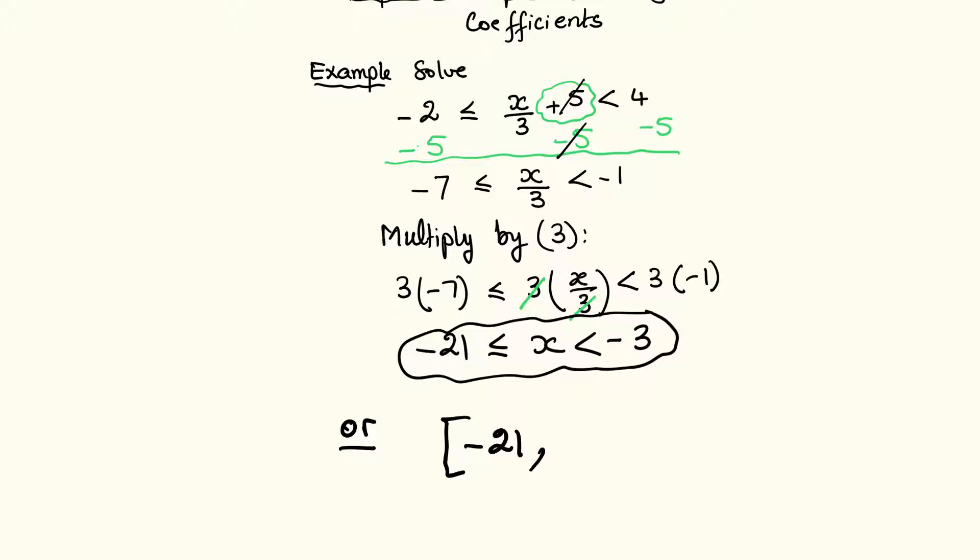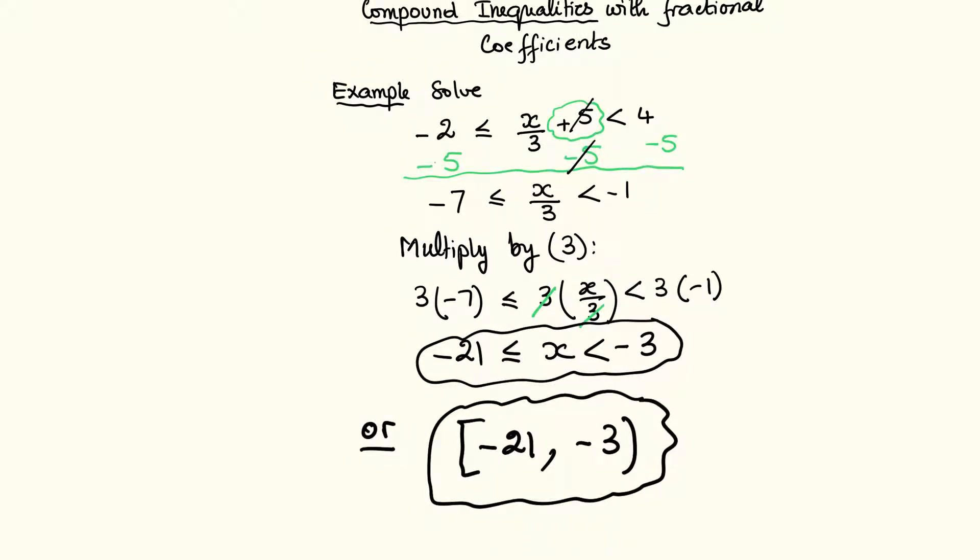equal sign there, all the way to -3 and open at -3. So this is another form of the solution. That is our solution.